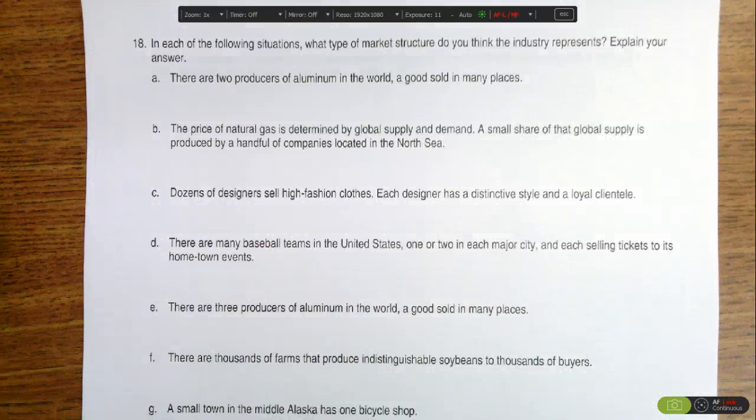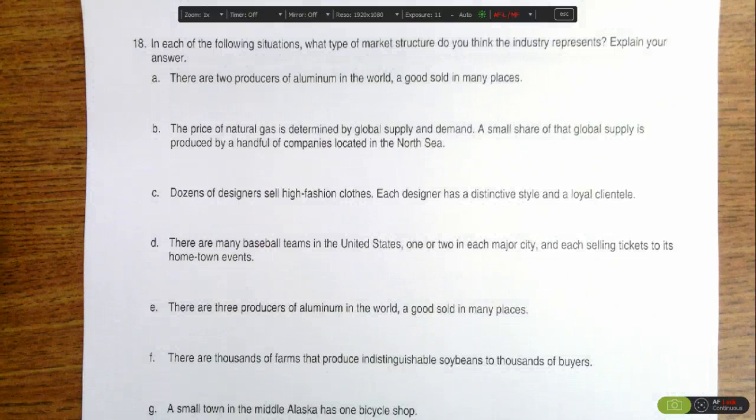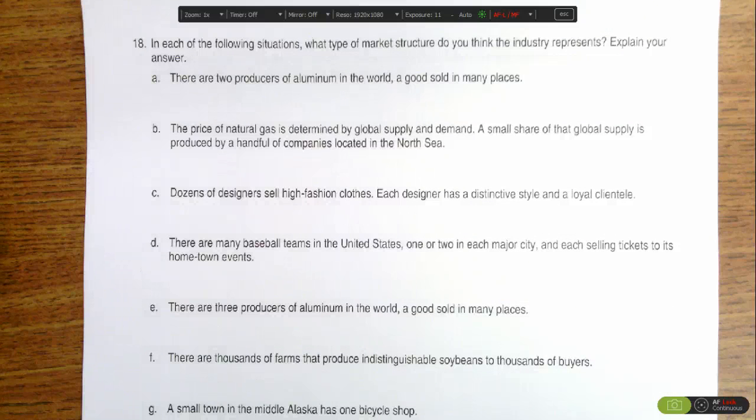This question is asking us to identify what type of market structure is being described by each of these situations. Look at part A, there are two producers of aluminum in the world.